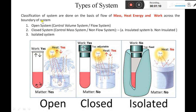There are basically three types of systems. One is the open system, which is also called a control volume system or flow system. Second is the closed system, which is also called a control mass system or non-flow system. And the third one is the isolated system. The closed system is further classified into two types: insulated system or non-insulated system. So let's start to understand the first kind of system, that is the open system, or control volume system, or flow system.